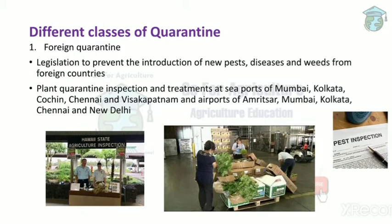In foreign quarantine, there are plant inspection sites at seaports — Mumbai, Kolkata, Kochi, Chennai, and Visakhapatnam — and at airports. If new plants are introduced through the sea route, inspectors check whether any pests are traveling with the plants. If plants travel through the air route, airport inspections check for pests. This is the main purpose of foreign quarantine.